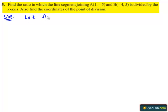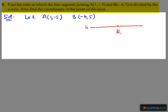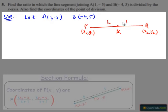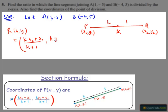Let the given points be A and B. We know that the coordinates of the point which divides the line segment joining P and Q in the ratio k:1 internally is given by (x, y) = ( (kx2 + x1) / (k + 1), (ky2 + y1) / (k + 1) ).